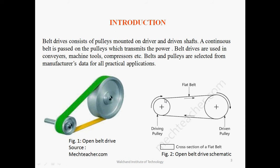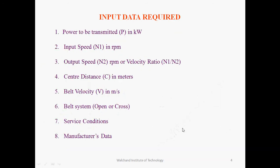The belt system may be either open or cross. In a cross system, the belt passes over the pulley and connects cross-wise to the other pulley. Based on the open or cross system, the length of the belt is calculated accordingly. The service conditions must also be taken into account — the belt may be operated for continuous hours of duty like 8, 16, or 24 hours in different environments and under varying shock load conditions such as minor shock, normal load, or shock load.